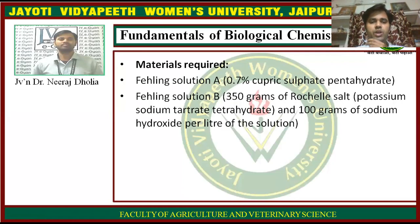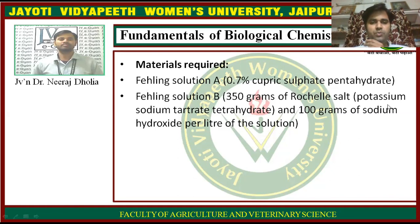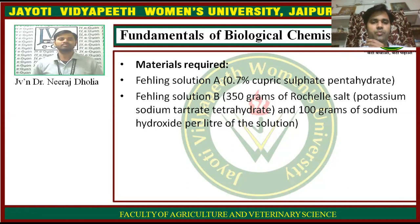The materials required are Fehling's solution A and Fehling's solution B. Fehling's solution A is a 0.7% cupric sulfate pentahydrate solution — dissolve 0.7 g of cupric sulfate pentahydrate in 100 ml of distilled water. Fehling's solution B is prepared by dissolving 350 g of potassium sodium tartrate tetrahydrate and 100 g of sodium hydroxide in 1000 ml of solution.